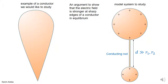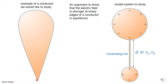We want to give a model to show that when you have a conductor, the electric field at sharp edges is much bigger than the electric field where the curvature is less. This is the kind of conductor we want to study — we want to prove that the electric field is stronger at the sharp edges.